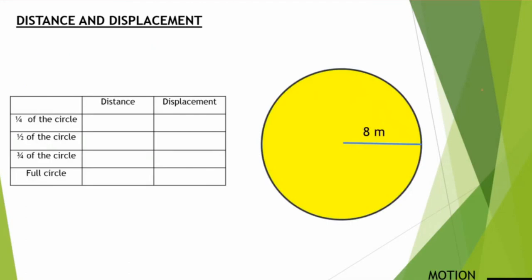Next, we have a circle with a radius of 8 meters. The different cases are 1/4, 1/2, 3/4, and the full circle. I'll label the points: at 1/4 the point is A, at 1/2 the point is B, at 3/4 the point is C, and for the full circle it's D, so that it's easy for us.